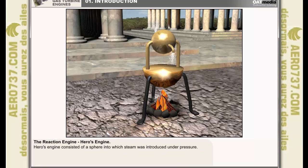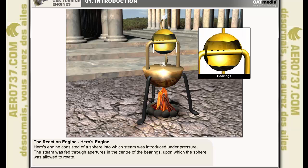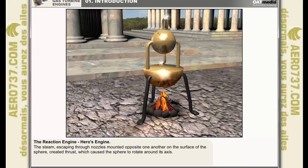The first recorded use of a reaction engine was by Hero of Alexandria in 250 BC. Hero's engine, a representation of which is shown here, consisted of a sphere into which steam was introduced under pressure. The steam was fed through apertures in the center of the bearings upon which the sphere was allowed to rotate. Allowing the steam to escape through nozzles in two bent tubes mounted opposite one another on the surface of the sphere created thrust, which caused the sphere to rotate around its axis.